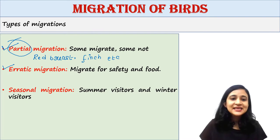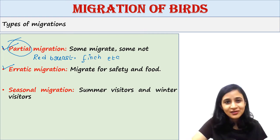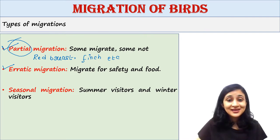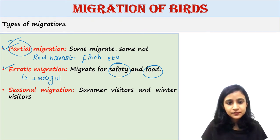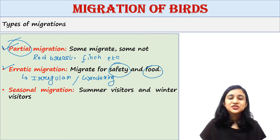Next is erratic migration. In erratic migration, some birds simply disperse — they do not migrate in the traditional sense. They disperse to a short or long distance for their safety and food. It is called erratic migration, irregular migration, or wandering migration. This type of migration occurs in birds such as the great blue heron and cuckoo.